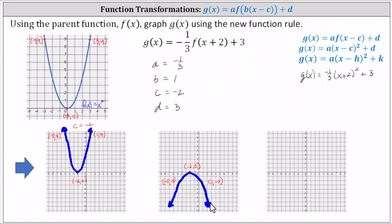This is the graph after being shifted left two units and then being vertically reflected as well as vertically compressed by a factor of one-third. Again, this is because a equals negative one-third. And then finally we have the plus three, which indicates d equals three, indicating the graph has shifted up three units.